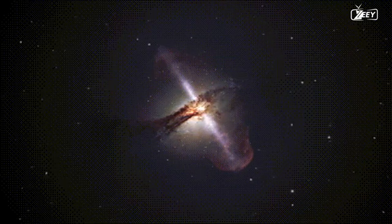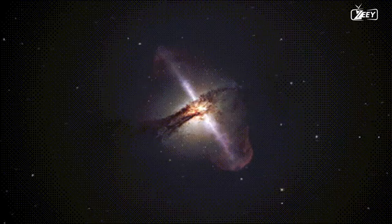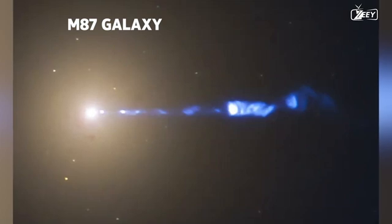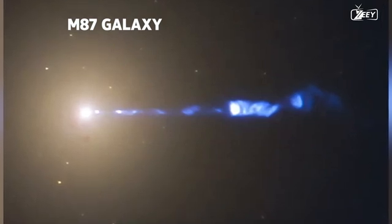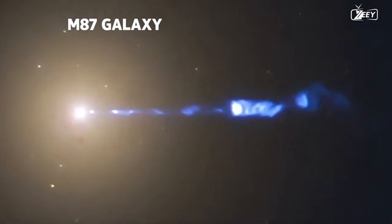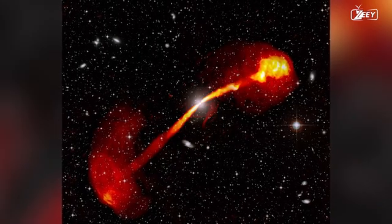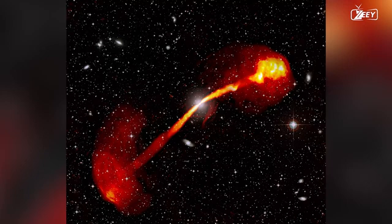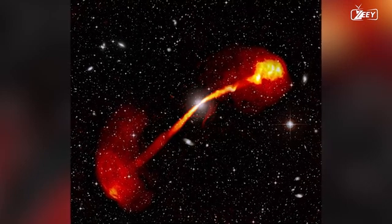On the other hand, when the jet's particles move away from us, it will appear fainter. Take the M87 galaxy as an example. Its 5,000 light-year long jet, which is pointed in our direction, is visible. Special relativity governs the properties of the matter inside this jet since it is moving at speeds that are very close to the speed of light.